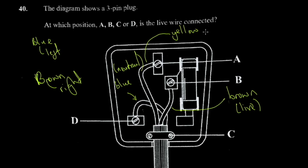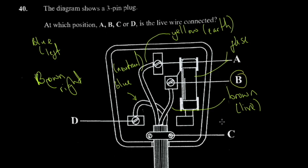The remaining wire is the earth, which is yellow. There's also a fuse which holds the cable in place. So which position is the live wire connected to? The live wire is the brown one, so it's actually position B. These are easy marks because there are very few concepts and it's very easy to understand.